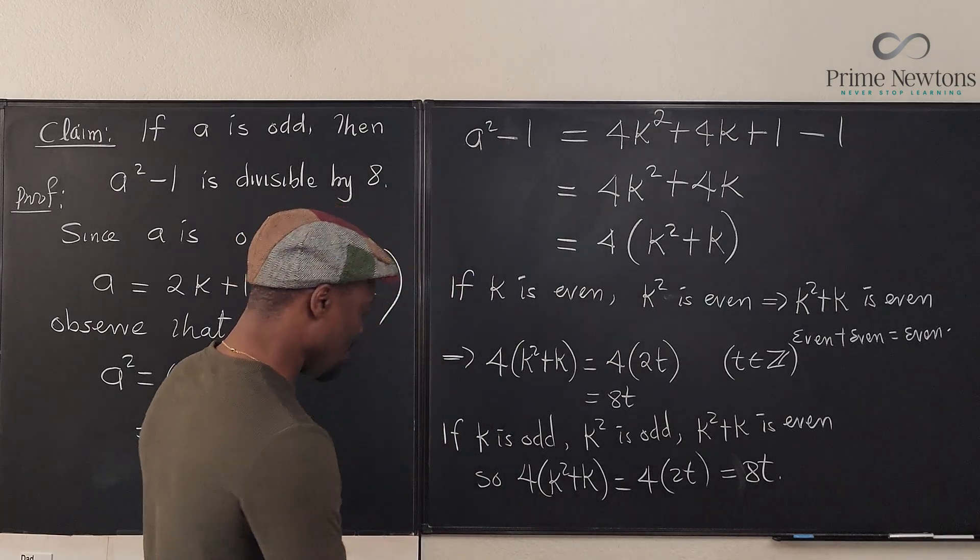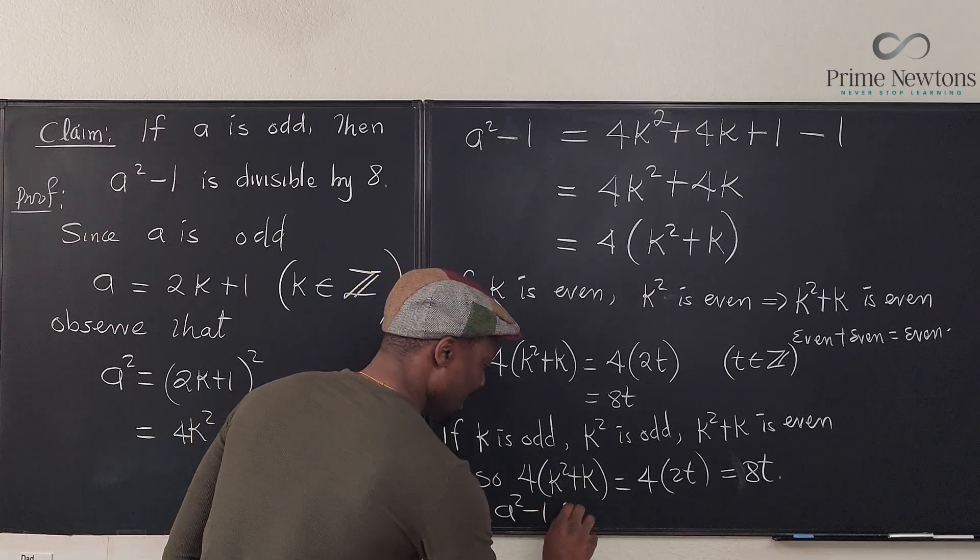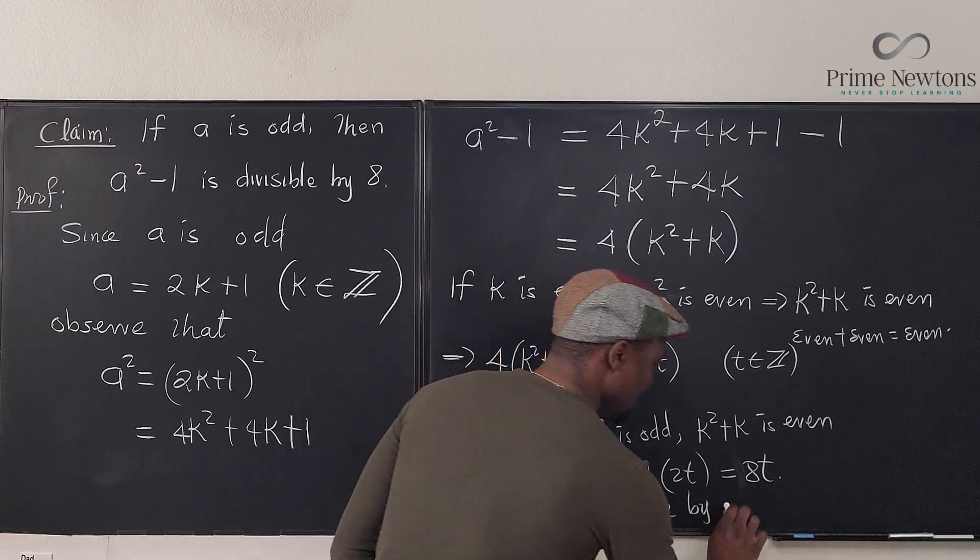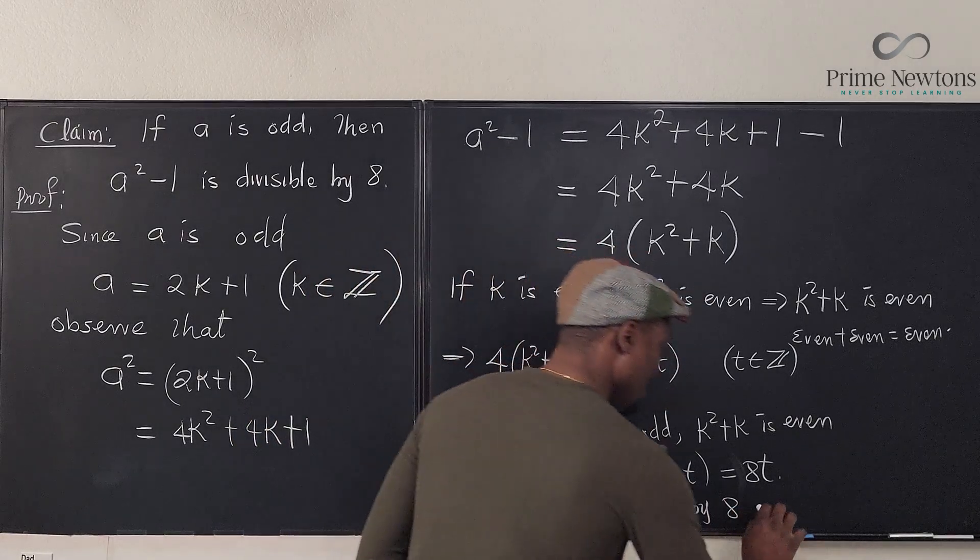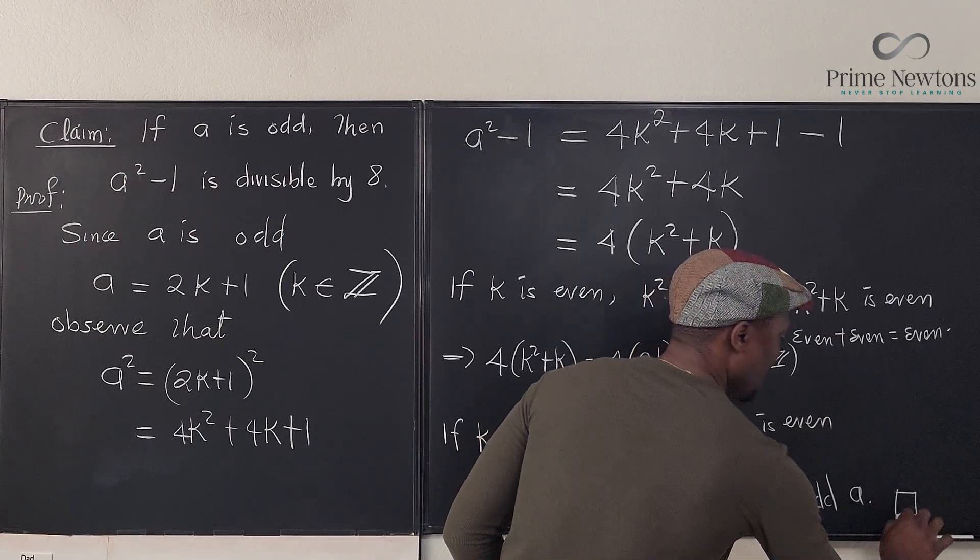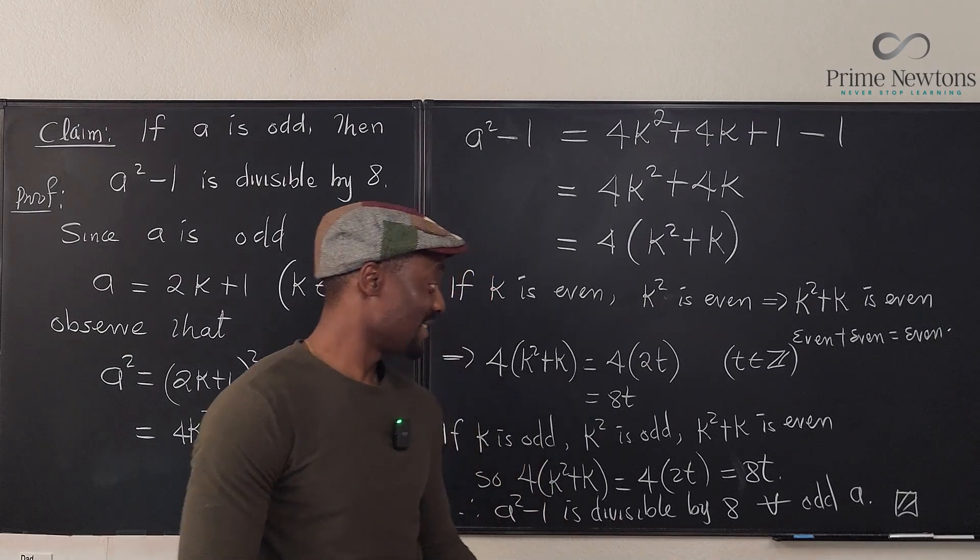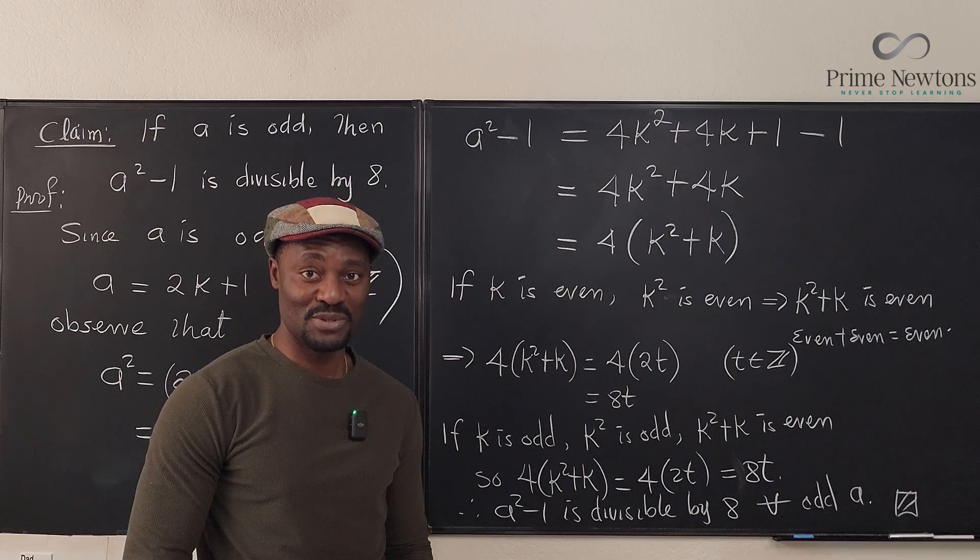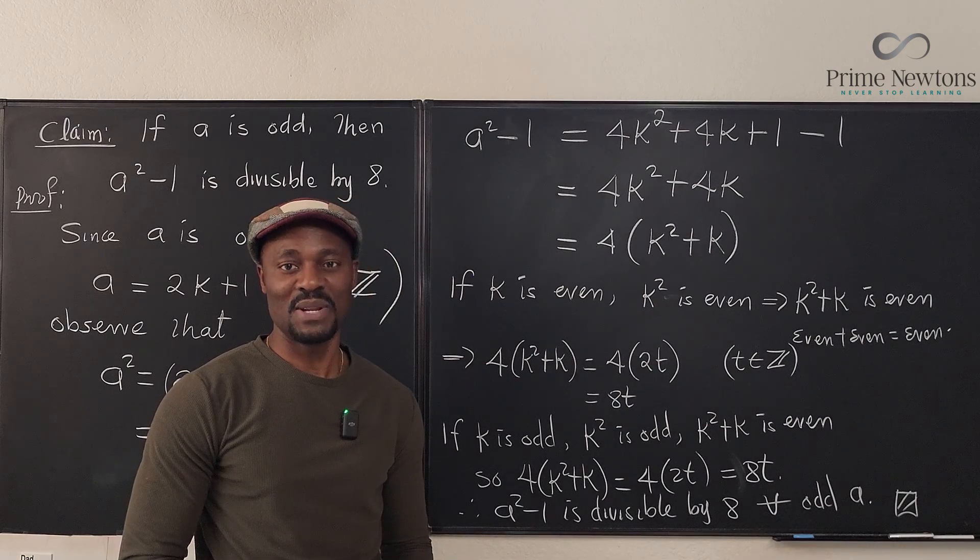So how do we conclude this? We can say, therefore, a² - 1 is divisible by 8 for all odd numbers, for all odd a. There we go. This is not by mathematical induction, although I could have used it. But I think this one brings a different perspective to how numbers behave. See you in the next video. Never stop learning. Those who stop learning, stop living. Bye-bye.